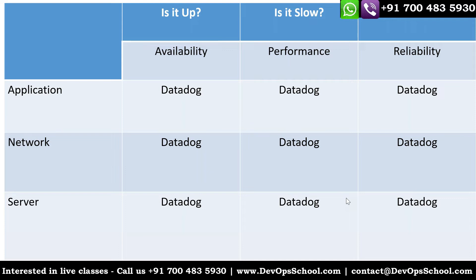You want to know if your application is up or not - that falls under availability, and Datadog supports that. You want to know how your application is performing, whether it's slow - Datadog will help you with that. You want to know if the application is broken or not reliable - Datadog will help you find out. The same goes for network availability, network performance, network reliability, server availability, server performance, and server reliability. In short, Datadog helps you with everything.